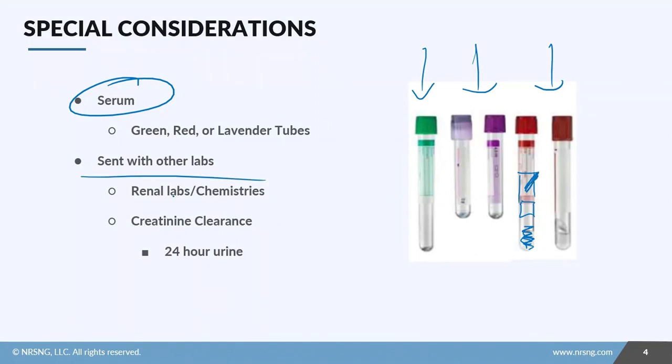You're going to send these with other labs, you're going to send these with your renal labs or your chemistries. You may even send something called a creatinine clearance, and with the creatinine clearance you're going to need a 24-hour urine. If you go to the creatinine lesson there's more specifics on it, but there are three things that you need to know.